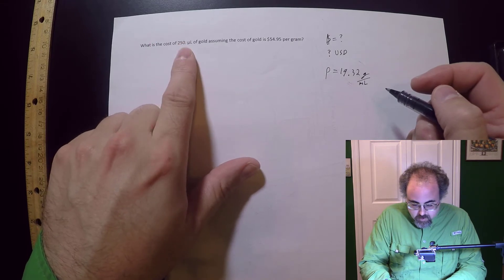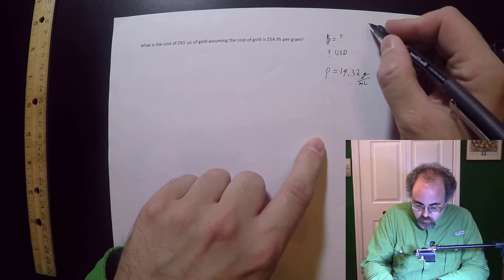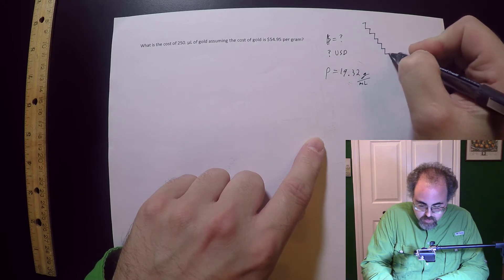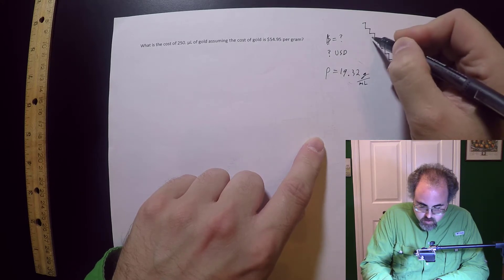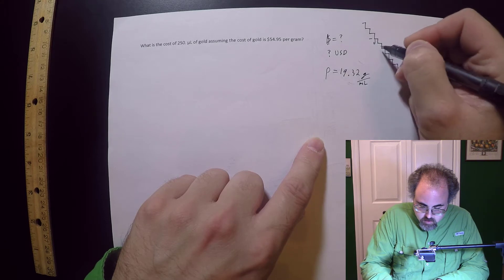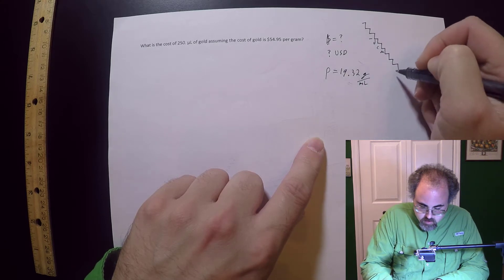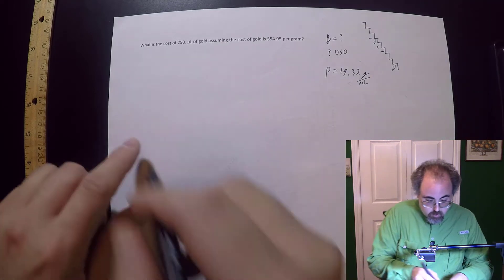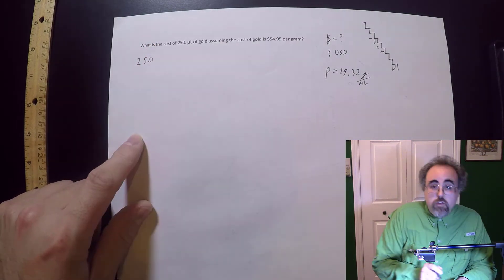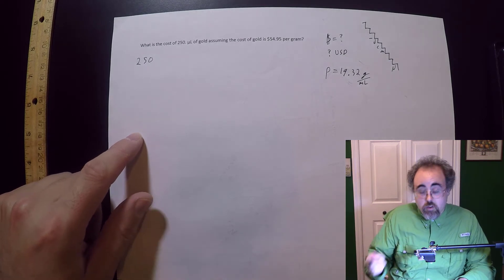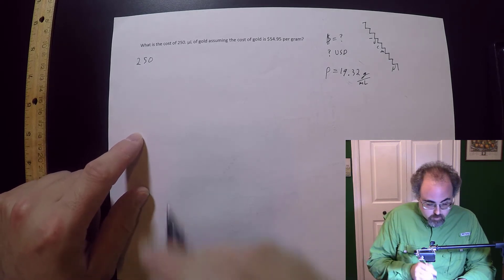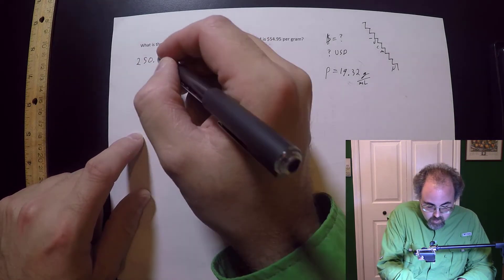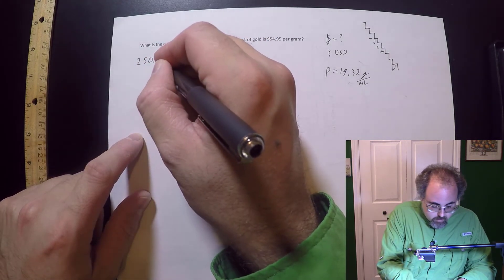Now I've got microliters over here so I can do the whole stairwell thing if I would like. Okay so 250 and once again I can do this in the dimensional analysis or I can do this afterwards. That decimal point is telling me sig figs. So I've got that many microliters.